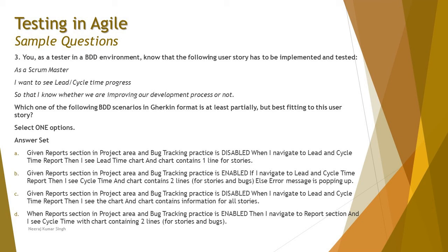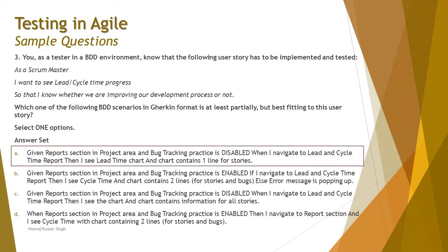We have to include the Given-When-Then format — that format is critically important. When you look at such questions, do not get carried away by the options; concentrate on whether the Given-When-Then format is used. In option D, 'Given' is not mentioned at all. The right answer is A: Given reports section in project area and bug tracking practice is disabled, When I navigate to the lead and cycle time report, Then I see lead time chart and chart contains only one line for stories.